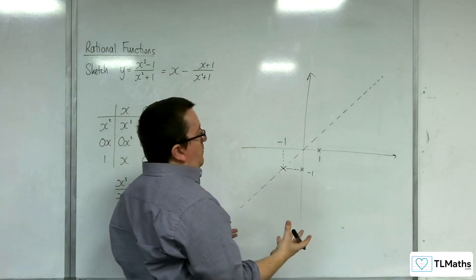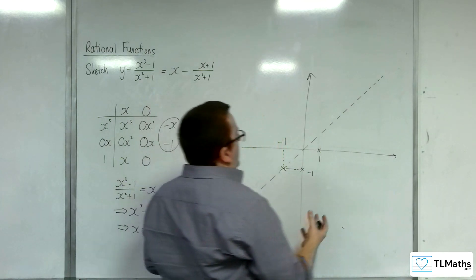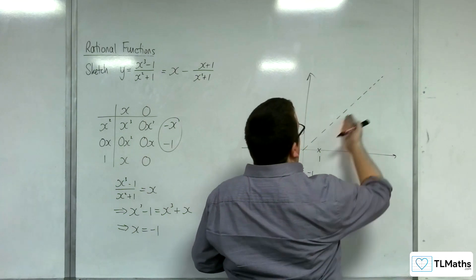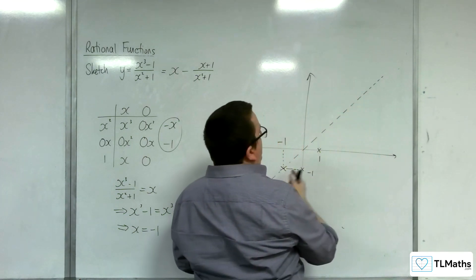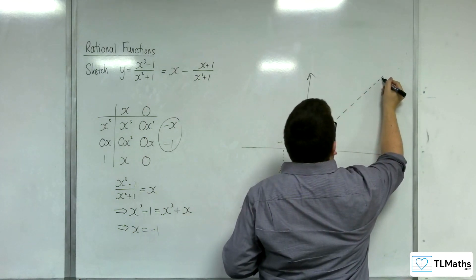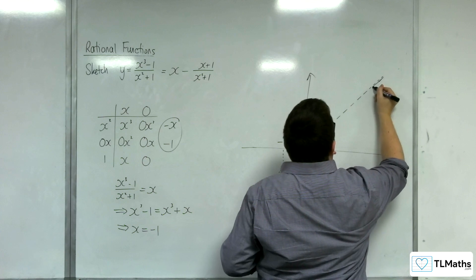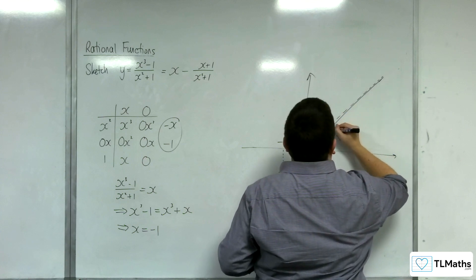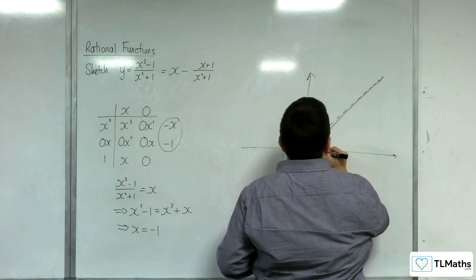The curve needs to tend towards that oblique asymptote. So, it has to be below it here, because it can't cross it, it only crosses it there. So, we're going to have to be below it.